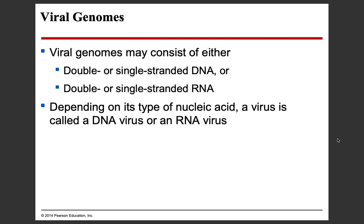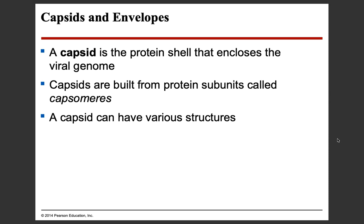Viral genomes can consist of either DNA or RNA, and this can be double or single stranded in either case. We have to have nucleic acid because that's the blueprint for life — these are the directions the virus needs to make more virus. Depending on the type of nucleic acid, a virus is called a DNA virus or an RNA virus. An RNA virus is also called a retrovirus. Anything with the prefix 'retro' is talking about something that contains RNA — retro has an R, RNA has an R. It's convenient.